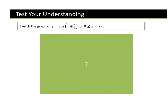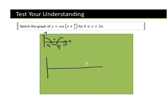Step 1 — draw the cos graph. I know it cuts at certain key points. This is π, π over 2, 3π over 2, and this is 2π. It's inside the bracket so it affects the x-axis. It says plus π over 2, so we're actually going to take away π over 2 from all of our x-coordinates.